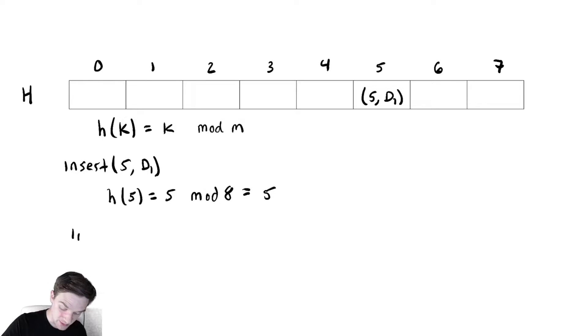Now let's say we inserted 11 comma d2. We would have h of 11 is 11 mod 8, which will give us 3, the remainder when you divide 11 by 8. So at location 3 we input 11 comma d2.